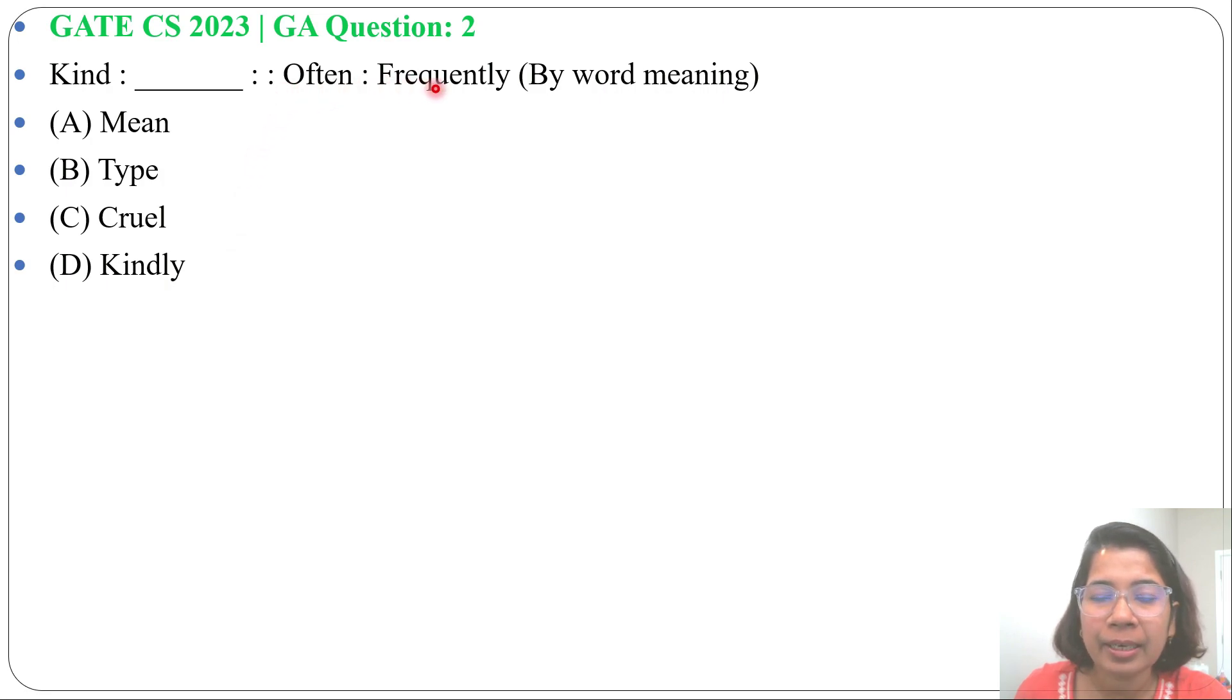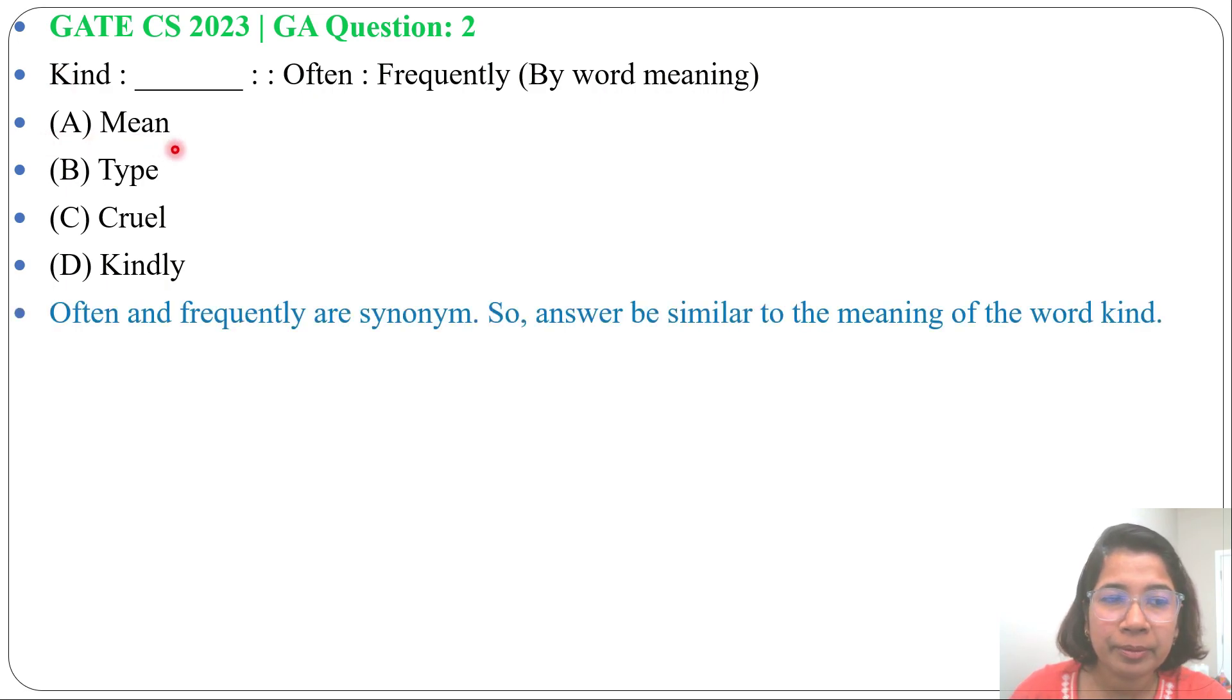Often and frequently are synonyms, so we need to find a synonym of kind. Option A is Mean. Mean has a different meaning, it's not the same as kind.